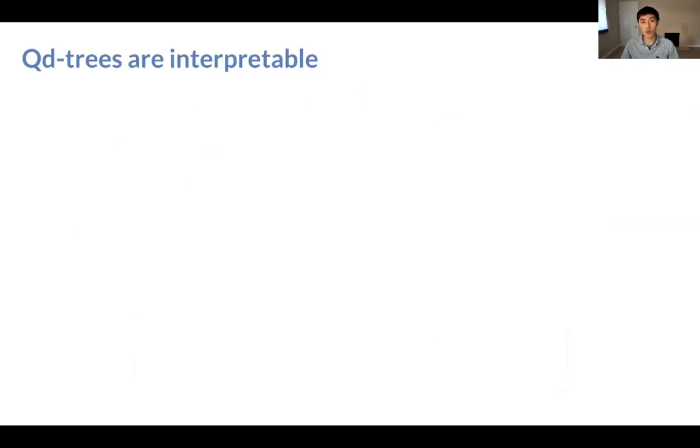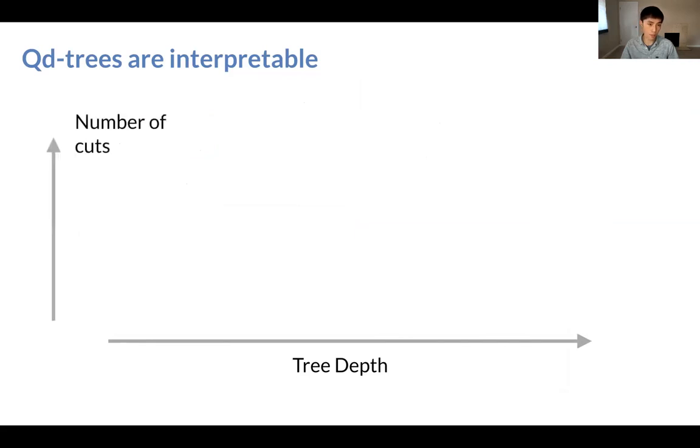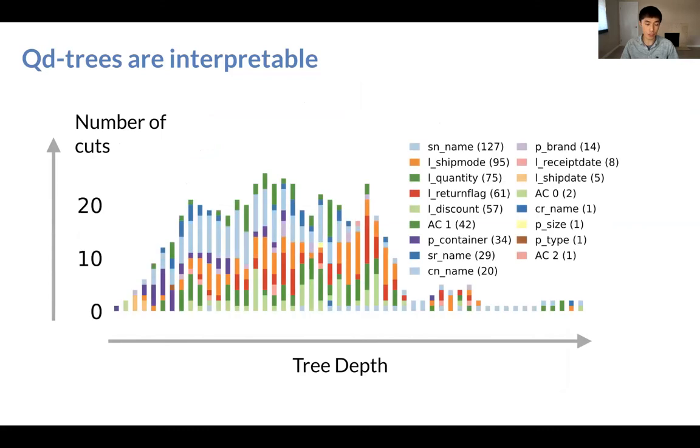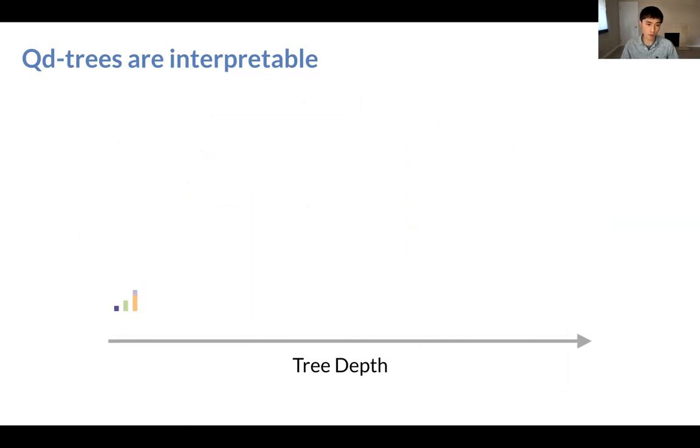Finally, we show that QD-trees are interpretable. Here, I'm going to visualize the best tree found for the TPC-H workload. On the x-axis, I'm going to show the tree level. On the y-axis, I'm going to show the number of cuts per column. So here's the visualization. We see that this is a very sophisticated layout learned by the QD-tree. Many columns are cut, and many of them are actually cut a lot of times throughout the whole tree.